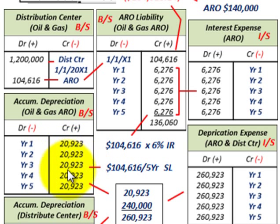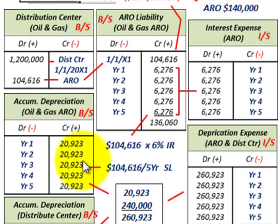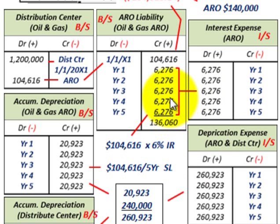The accumulated depreciation, which is a contra-asset account to our distribution center, gets recognized as depreciation expense on the income statement. That's how you handle AROs. There can be a lot of variables in your interest rates, but this is the basic approach you would use.